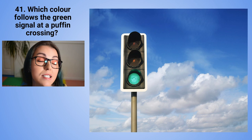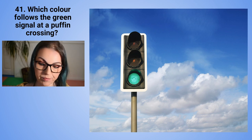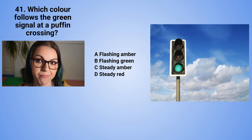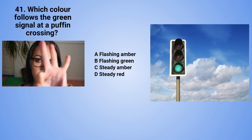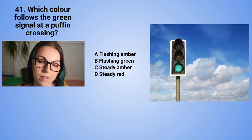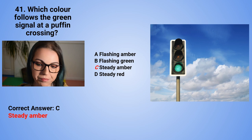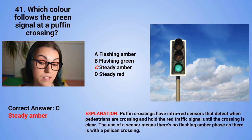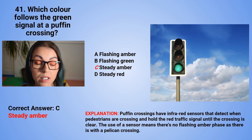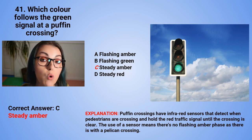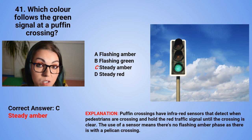Question 41: Which colour follows the green signal at a puffin crossing? A. Flashing amber. B. Flashing green. C. Steady amber. Or D. Steady red. The correct answer is C — steady amber. Puffin crossings have infrared sensors which detect when pedestrians are crossing and hold the red traffic signal until the crossing is clear. The use of a sensor means there is no flashing amber phase, as there is with a pelican crossing.